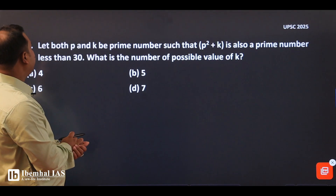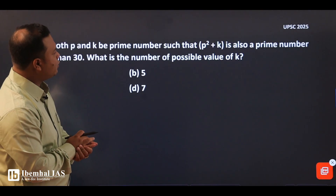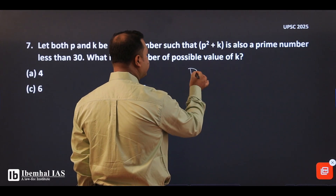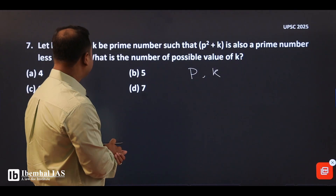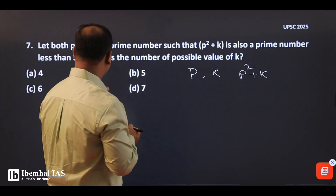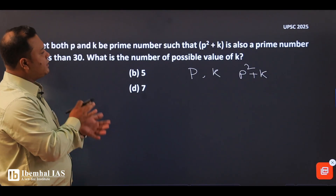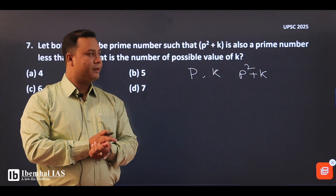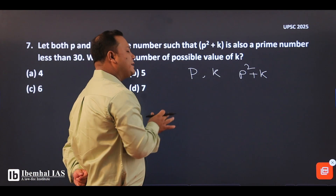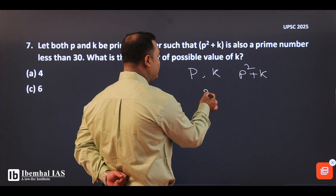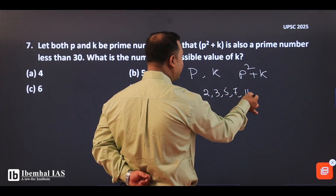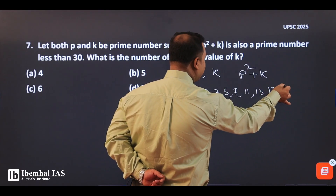Next, question number 7: Let both p and k be prime numbers such that p squared plus k is also a prime number, and k is less than 30. What is the number of possible values of k? The prime numbers less than 30 are: 2, 3, 5, 7, 11, 13, 17, 19, 23.